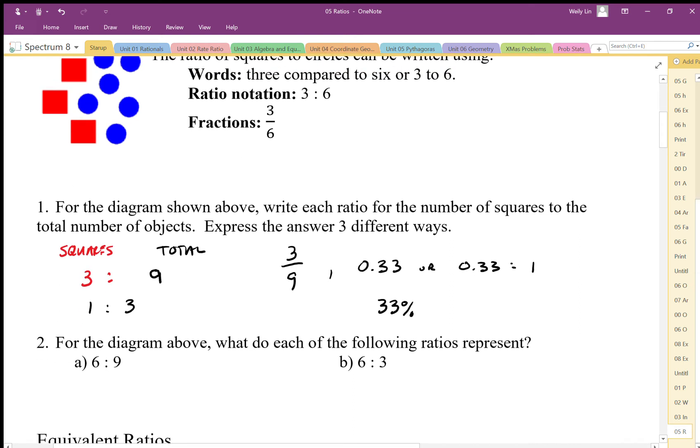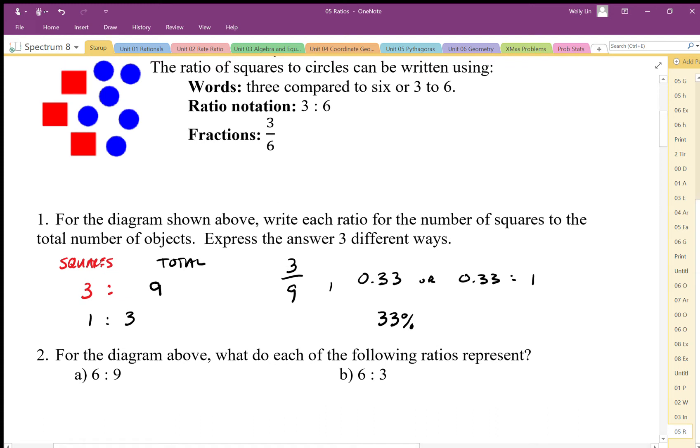For this diagram above, six to nine would represent - well we have six objects, the six objects could be the circles here. We have six circles and the nine objects would then represent the total.